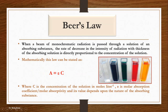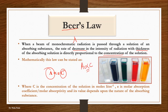Going to the next one: Beer said that when a beam of monochromatic radiation is passed through a homogeneous solution of absorbing substance, the rate of decrease in intensity — the absorbance — is proportional to the thickness, as Lambert said, but along with that it is also proportional to the concentration. There is now one more term: concentration. If I introduce a constant factor, it would be epsilon again. Concentration can be represented in moles per liter, and epsilon is the molar absorption coefficient or molar absorptivity.